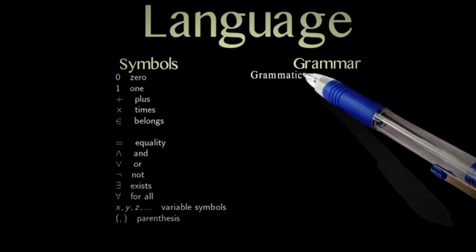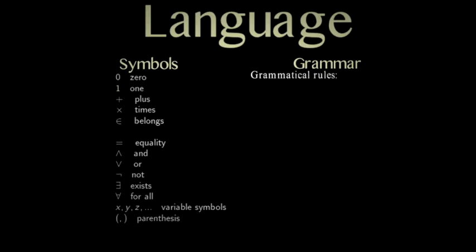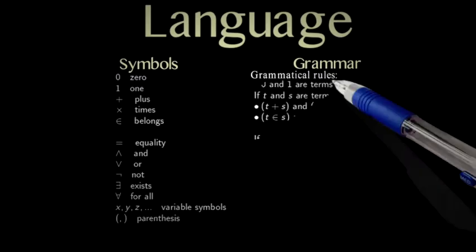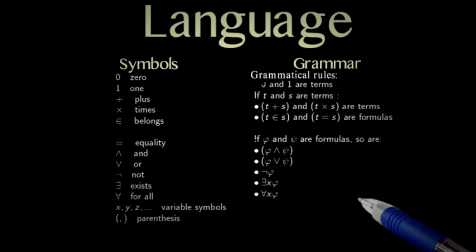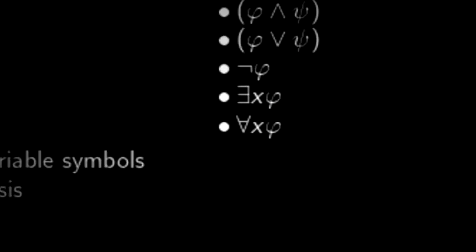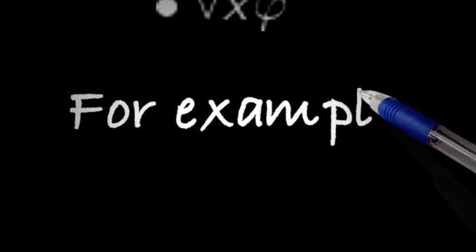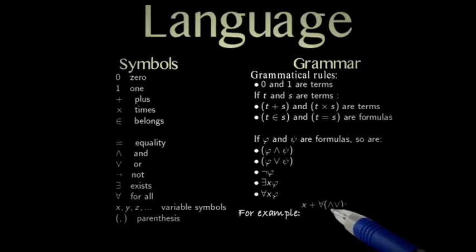Then we need to put these symbols together. For that, we need grammatical rules. Here's a standard set of rules. Don't worry about the details. I just want you to see what they look like. Essentially, when you see a string of symbols, you're going to be able to tell if it makes sense or doesn't. For instance, this one here obviously doesn't make sense. While this other one, for every x there exists a y such that y plus y equals x or y plus y equals x plus 1, is a sequence of symbols that makes sense.